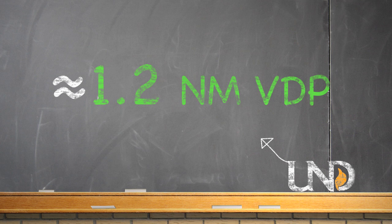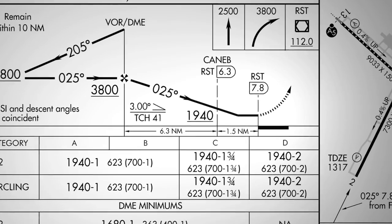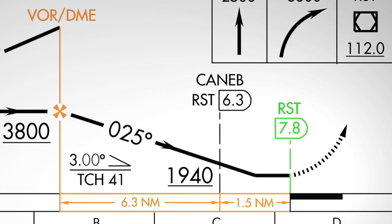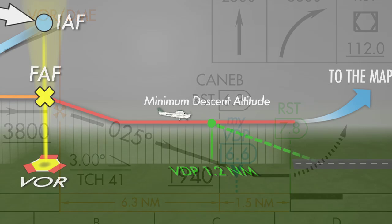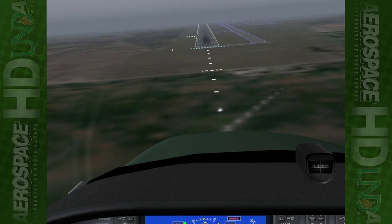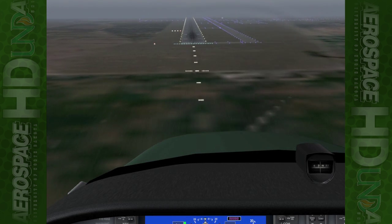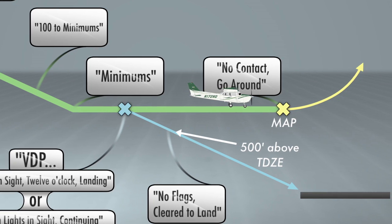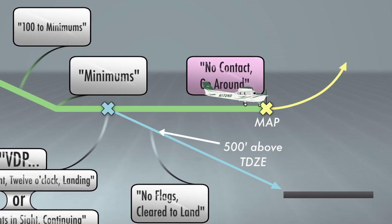As listed on the approach plate, the runway end is located at 7.8 nautical miles from the Rochester VOR. As a result, the VDP is located 6.6 miles, or 6.6 DME, from the Rochester VOR. As the aircraft arrives at the visual descent point, the pilot will either call out 'runway in sight, 12 o'clock, landing' and transition to a stabilized approach and landing, or the pilot will continue flying at the minimum descent altitude until reaching the missed approach point.